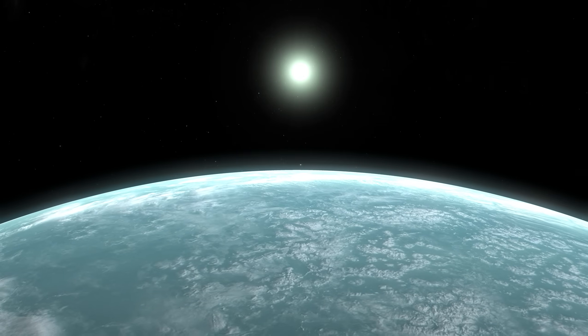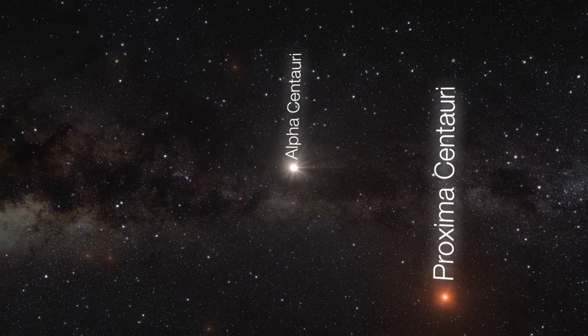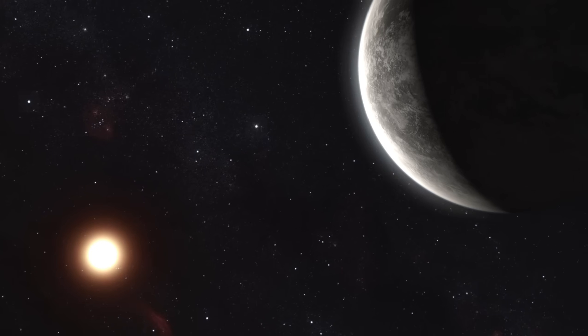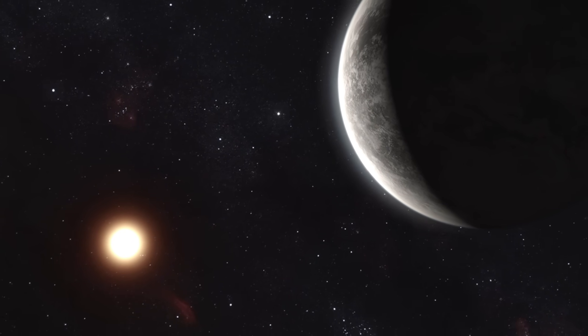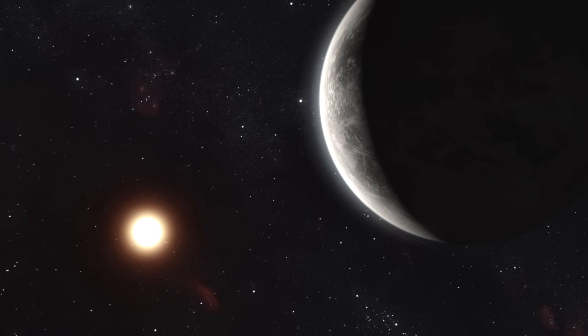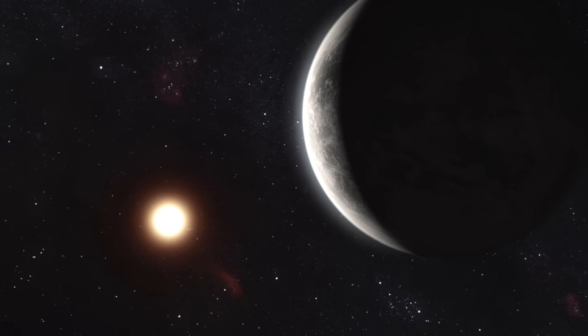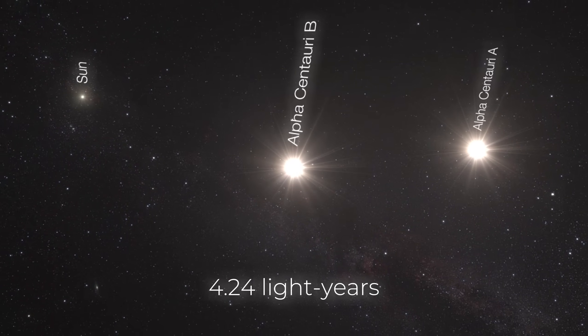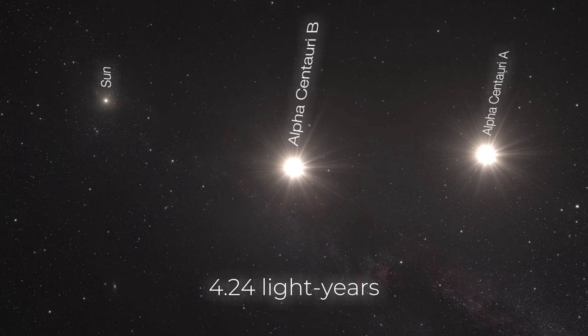David Kipping, an astronomer studying this exoplanet, mentioned that the planet seems quite complex. It does not behave like other rocky planets. Instead of just absorbing sunlight and releasing heat, it has a unique relationship with its star, Proxima Centauri, that is unlike anything we've seen.